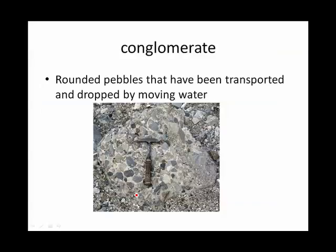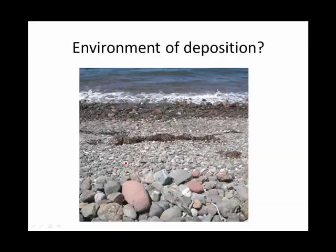A conglomerate — here you can see a rock, but inside the rock there are more rocks. Those are called the clasts, and they are rounded pebbles or cobbles. Since they're rounded, they must have been transported and then dropped by moving water. Here's a beach at Santa Cruz Island with a lot of rounded rocks, probably the result of waves wearing away the sea cliffs and moving the rocks back and forth, rounding them to their present shape.